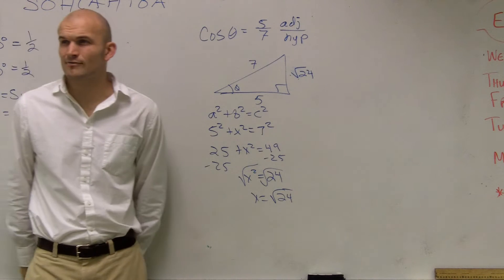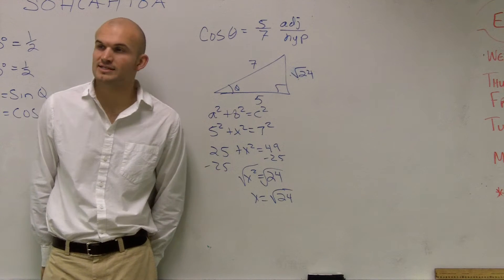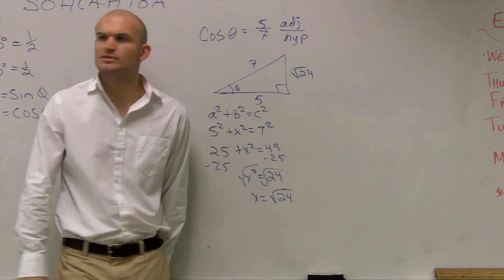Can you simplify that radical? You're probably going to want to do that. So we say, what root number goes into there? You could say 4 and 6. It would be 2 root 6.